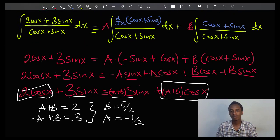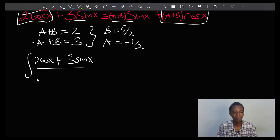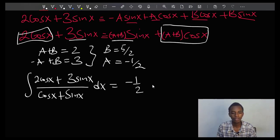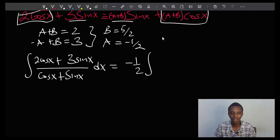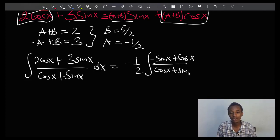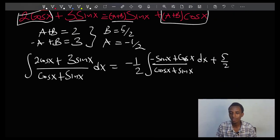So let's go ahead and use these values to rewrite the integrals better. So our integral of 2cos x plus 3sin x divided by cos x plus sin x equals negative 1 half times... the derivative here is negative sin x plus cos x divided by cos x plus sin x, dx, plus 5 over 2 times the integral of dx.